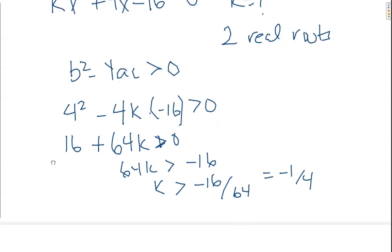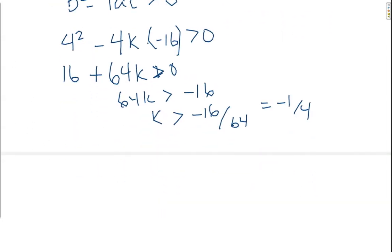So, whenever k is bigger than negative 1 quarter, if that's true, there are two real roots.